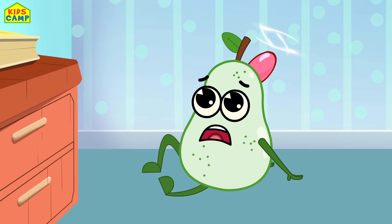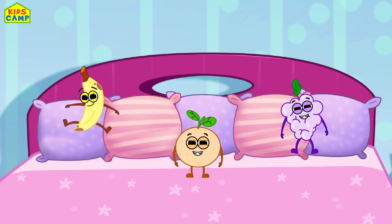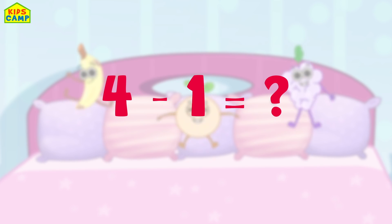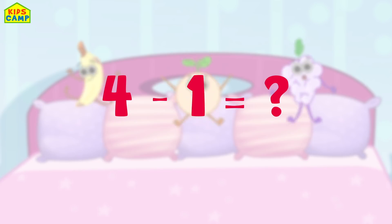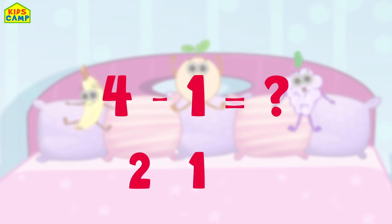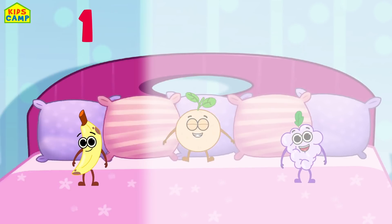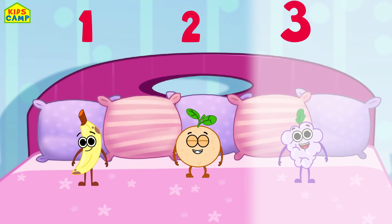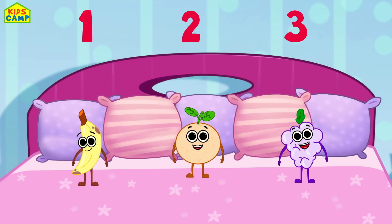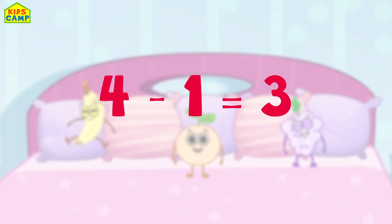Oops! One fell off! How many fruits do we have jumping on the bed now? Four minus one is... is it two? Is it one? Is it three? Three! Let's count! One! Two! Three! We have three fruits jumping on the bed! Four minus one is three!